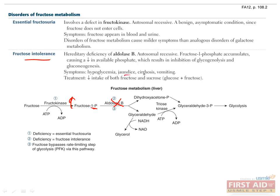Patients will also have jaundice, cirrhosis, and vomiting, due to the toxic accumulation of fructose 1-phosphate in the liver. The treatment for this is not to eat fructose